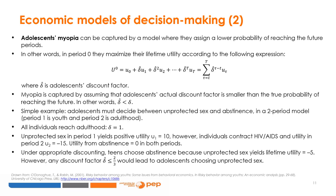Consider a model with two periods: period 1 is youth and period 2 is adulthood. Suppose all individuals reach adulthood, implying delta equals 1. Individuals must choose their sexual behavior. If individuals choose to have unprotected sex, their utility in period 1 equals 10; however, they contract HIV-AIDS and in period 2 their utility is negative 15. Utility from abstinence yields zero utility in both periods. Under appropriate discounting — true discount factor equals 1 — adolescents would choose abstinence because expected lifetime utility from unprotected sex equals negative 5. However, with any discount factor smaller than or equal to two-thirds, adolescents discount future disutility too much and choose to have unprotected sex.